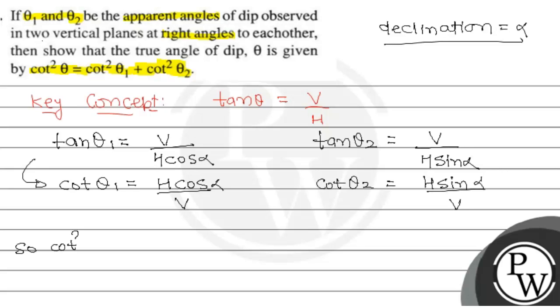So, cot² θ₁ + cot² θ₂ will be equal to H² upon V² times (cos² alpha + sin² alpha), and that will be 1. So, H² upon V² is cot² theta, since cot θ is equal to H upon V. That means cot² θ.